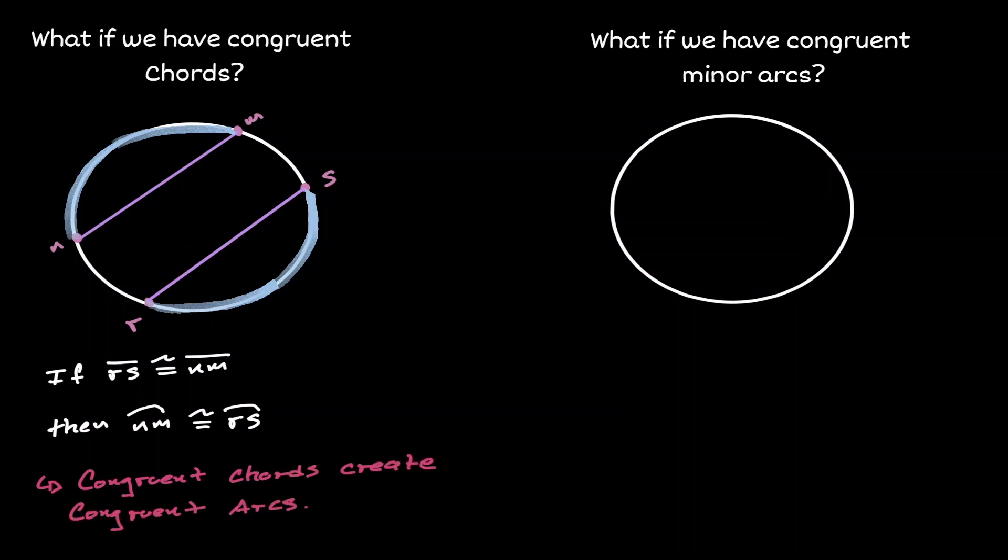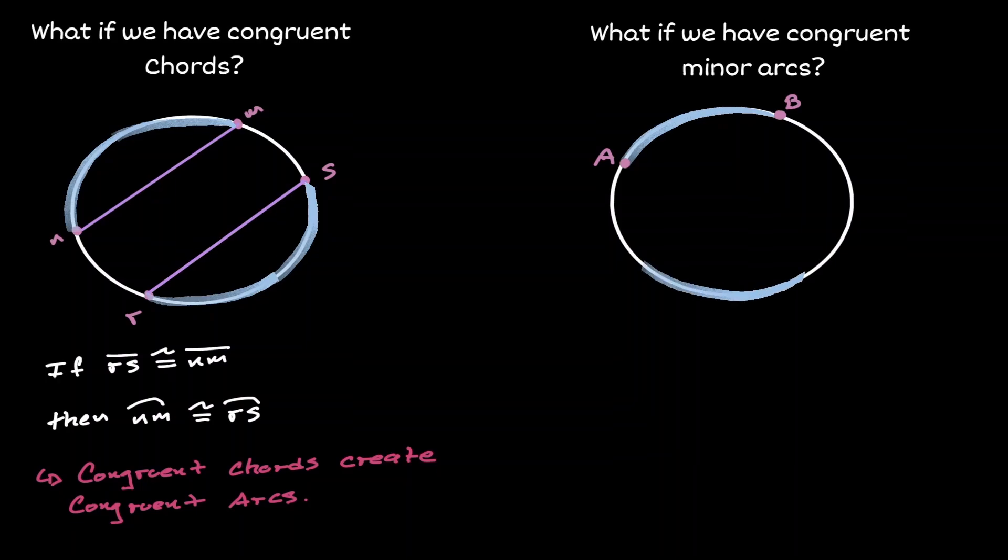But what if it's the other way around? What if we have congruent minor arcs? If we consider one arc, let's call it AB, and if we consider another arc that is also congruent to AB, let's call it arc CD.